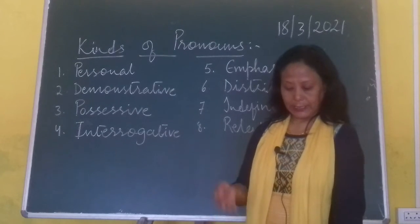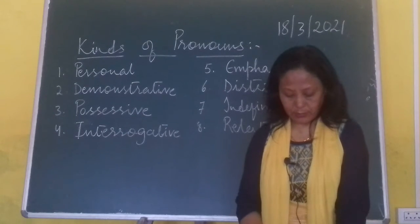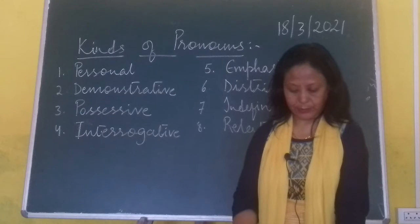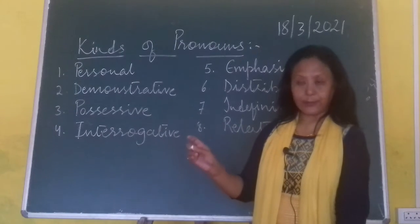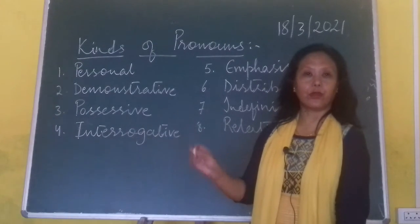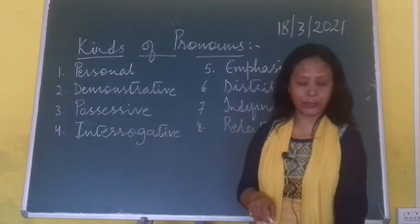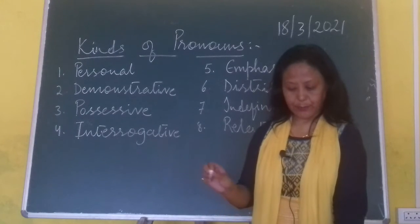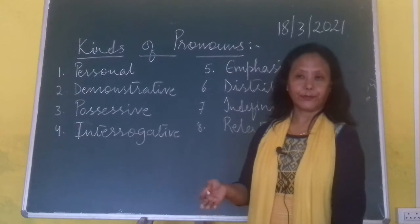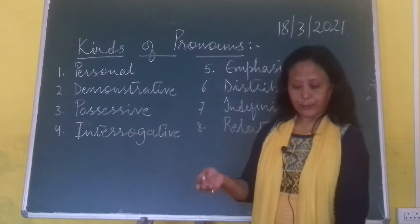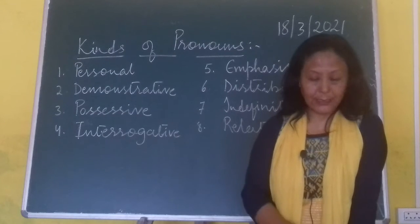Personal pronouns are he, she, it, and all that. So there are some examples here. Ruskin Bond writes books for his children — Ruskin Bond lives in the hills. That is incorrect, so I have replaced that with 'he' — it is a personal pronoun. The children went for the party, they enjoyed it. So instead of writing 'the children enjoyed children', we replace it. That is a personal pronoun.